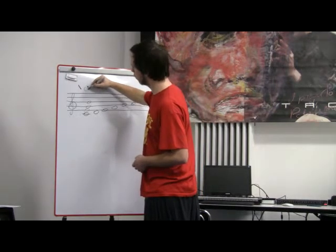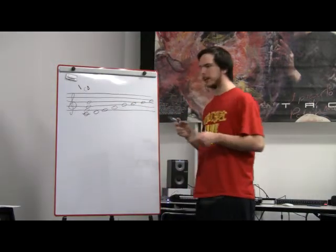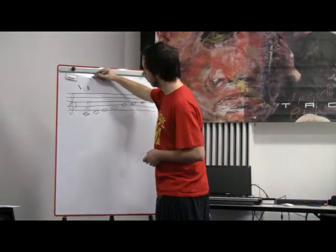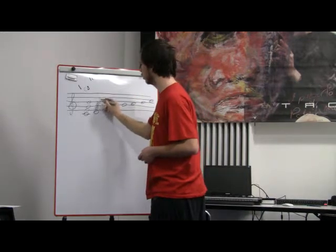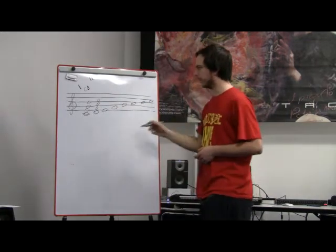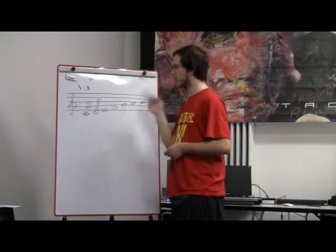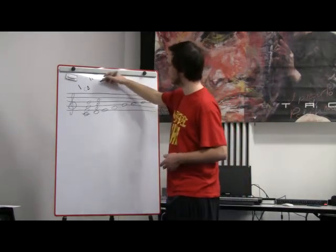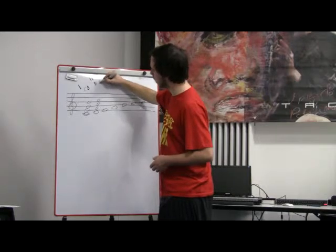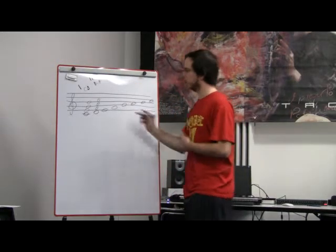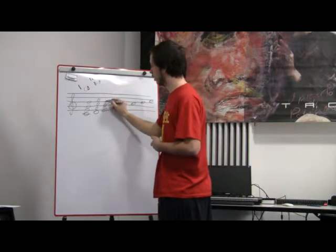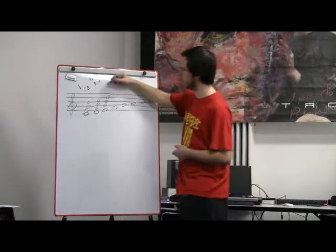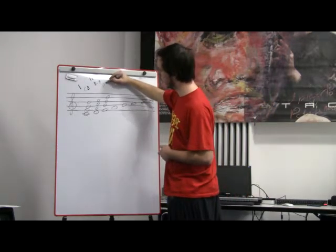And the second grade, the D. We have in this case a minor third, a perfect fifth and a minor seventh. This chord is called a minor seventh chord so it's a D minor seventh. And the third grade has minor third and minor seventh as well so it's another minor seventh, E minor seventh.